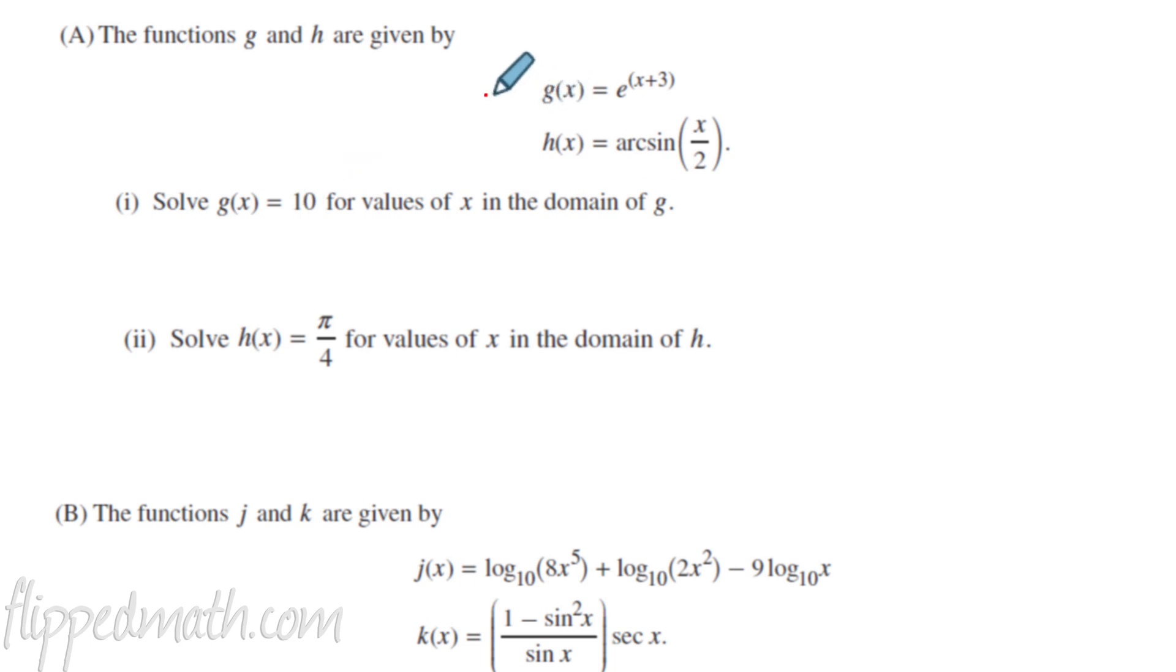A1, they want you to solve for g of x, which is given up here. It's going to be equal to 10. So this isn't too hard of a problem here. So we get 10 equals e to the x plus 3. In order to get that x out of the exponent, we have to use a log, right? And we have to use the same log that the base is. So that's the natural log.